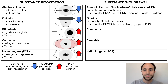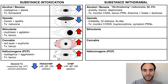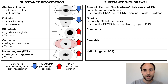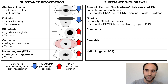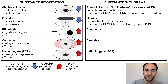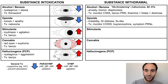Opioid withdrawal involves irritability, GI distress including frequent diarrhea and vomiting, and flu-like symptoms such as muscle aches and rhinorrhea. Although not life-threatening, it is extremely uncomfortable, and monitored withdrawal in a controlled setting is often indicated. This involves monitoring symptoms with the COWS scale, easing withdrawal with buprenorphine, and using other PRN medications for control of specific symptoms.